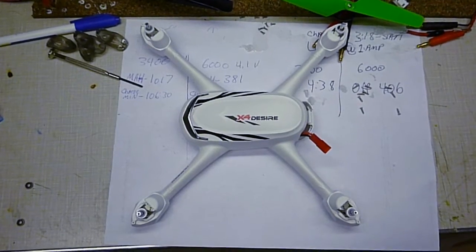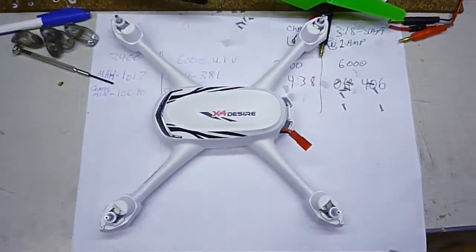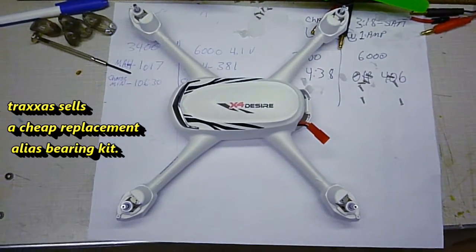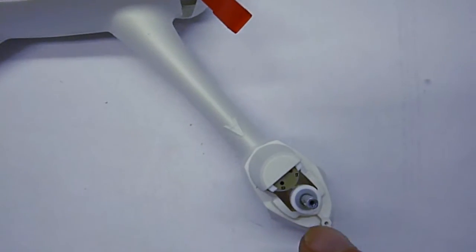Blanco here, and I'm going to put ball bearings in from a Latrax Alias. They fit in the Hubsan x4 Desire, the H502E that comes with the plastic bushings you can see here.